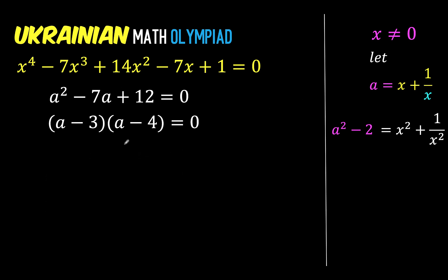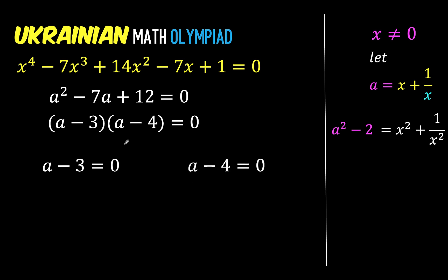So the factors are a minus 3 and a minus 4, and that equals 0. Using the zero product property, each factor can be equated to 0. Solving for a, we get a equals 3 and a equals 4.